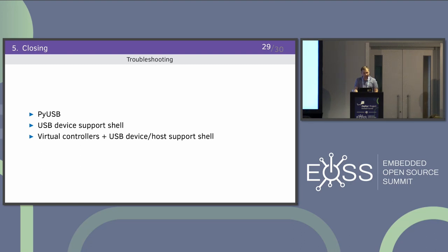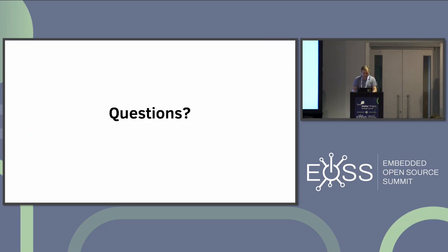For troubleshooting, one approach is to use USB host — you can just remove the host driver and start a control or bulk transfer from the USB host side to observe the new device instance behavior. We also have USB device support for shell, and there's a virtual controller implementation for USB host and USB device also with shell support — that's another way to debug your class instance.